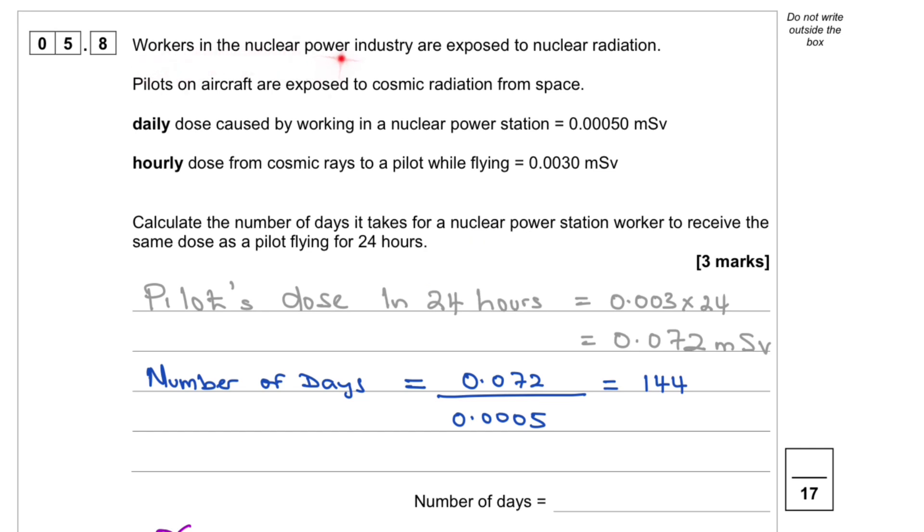5.8. Workers in the nuclear power industry are exposed to nuclear radiation. Pilots on aircraft are exposed to cosmic radiation from space. Daily dose caused by working in a nuclear power station equals 0.0005 millisievert. Hourly dose from cosmic rays to a pilot while flying equals 0.003 millisievert. Calculate the number of days it takes for a nuclear power station worker to receive the same dose as a pilot flying for 24 hours.